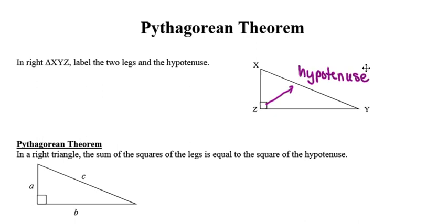The two sides that together form the right angle in our triangle are the legs. So the right angle is here at Z. These two red sides would be the legs of our right triangle.